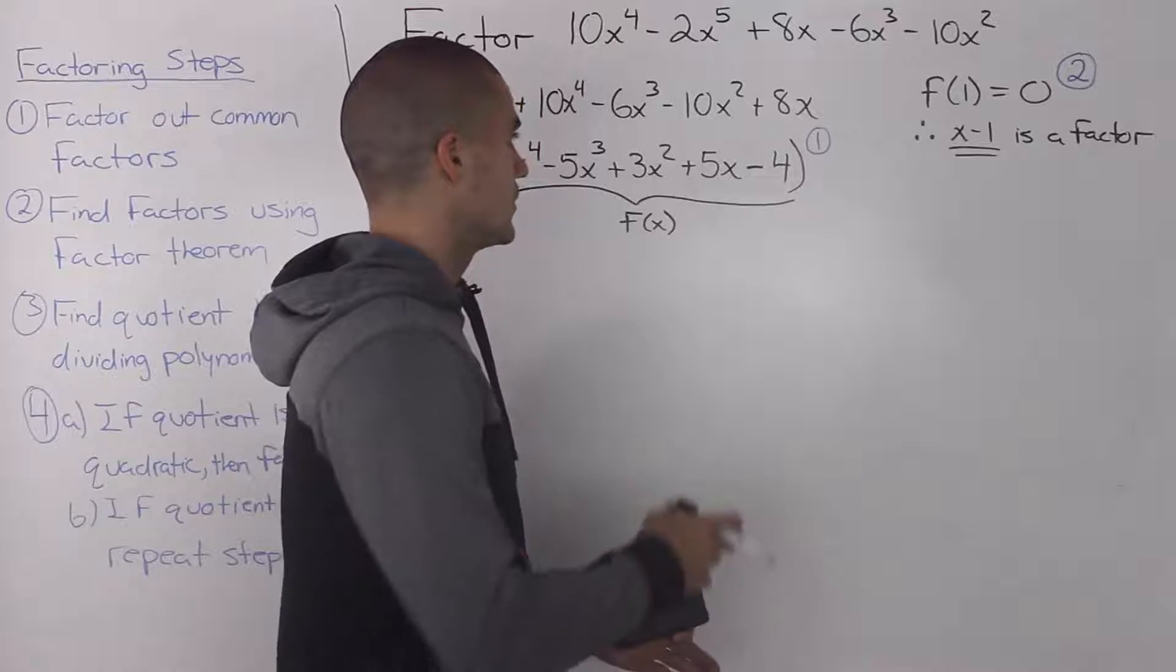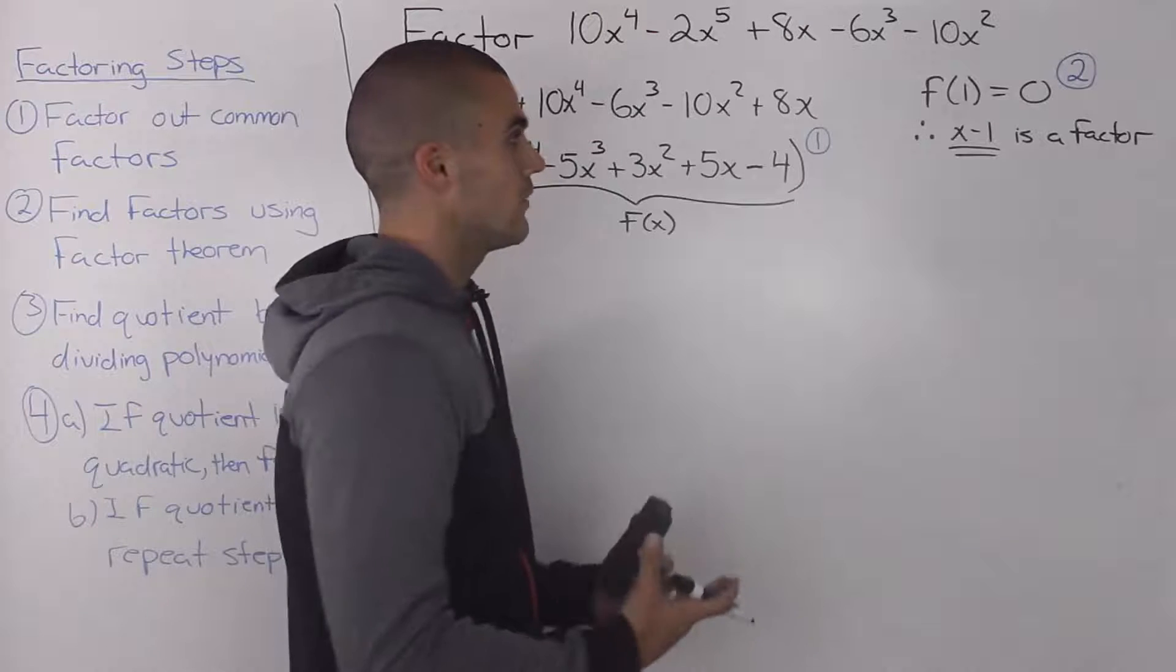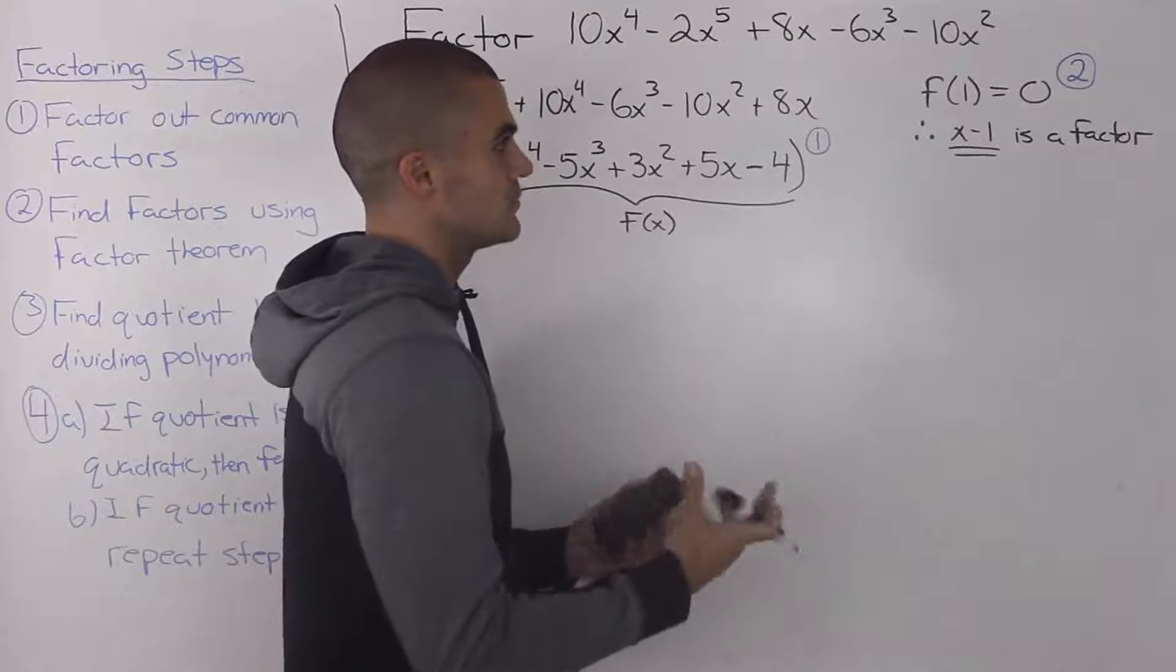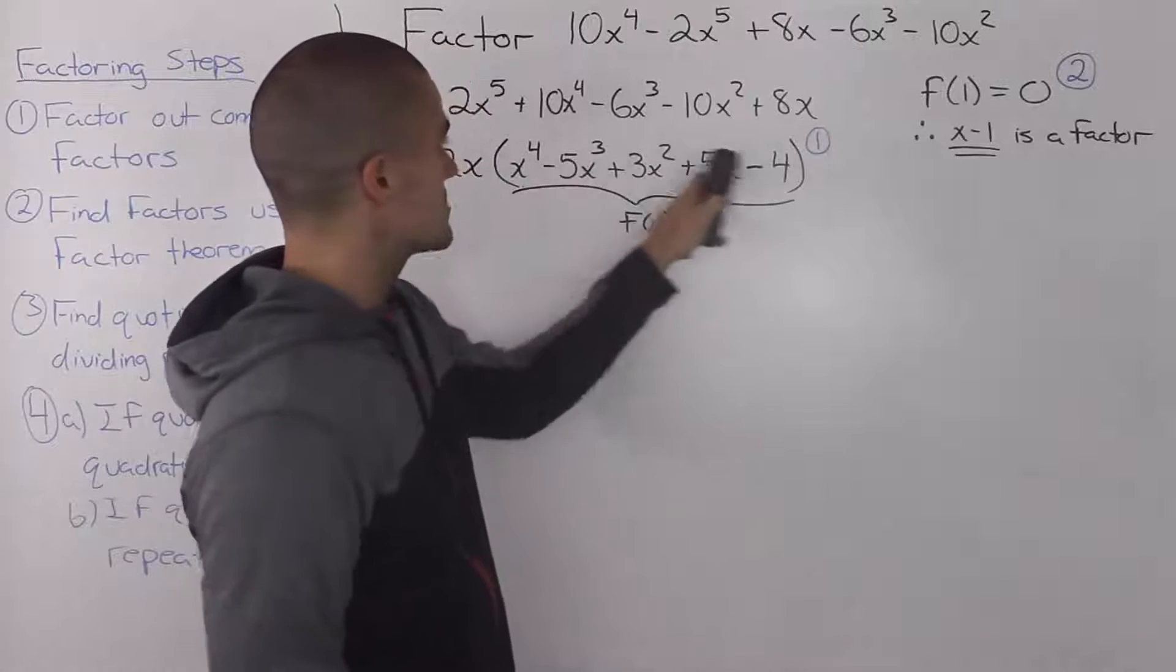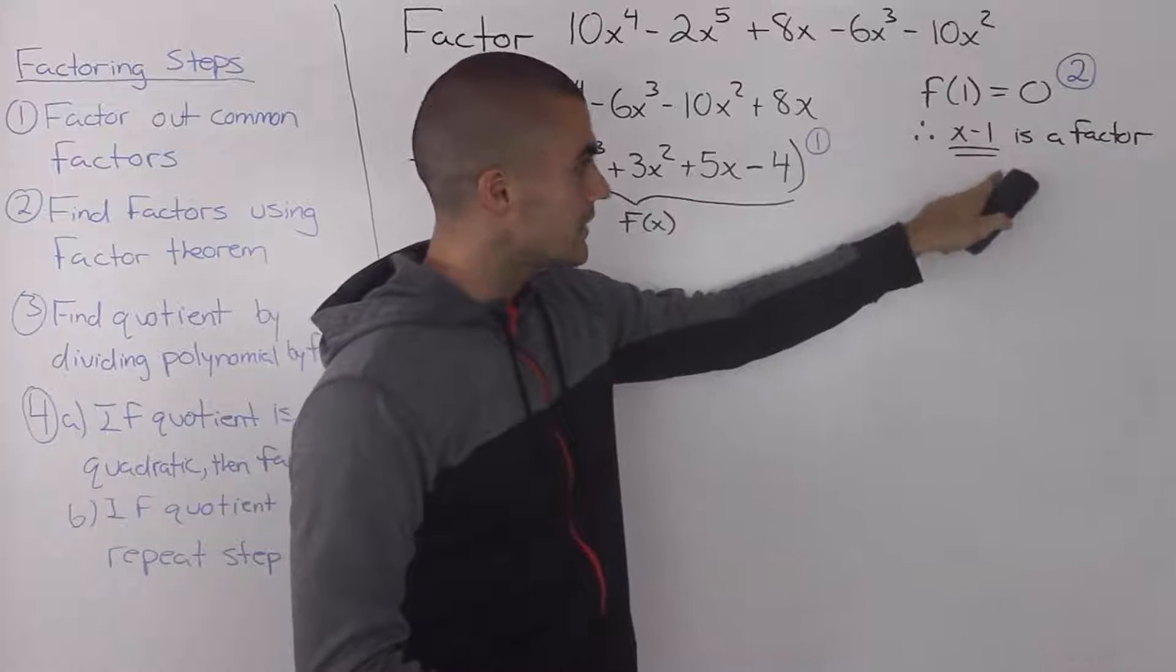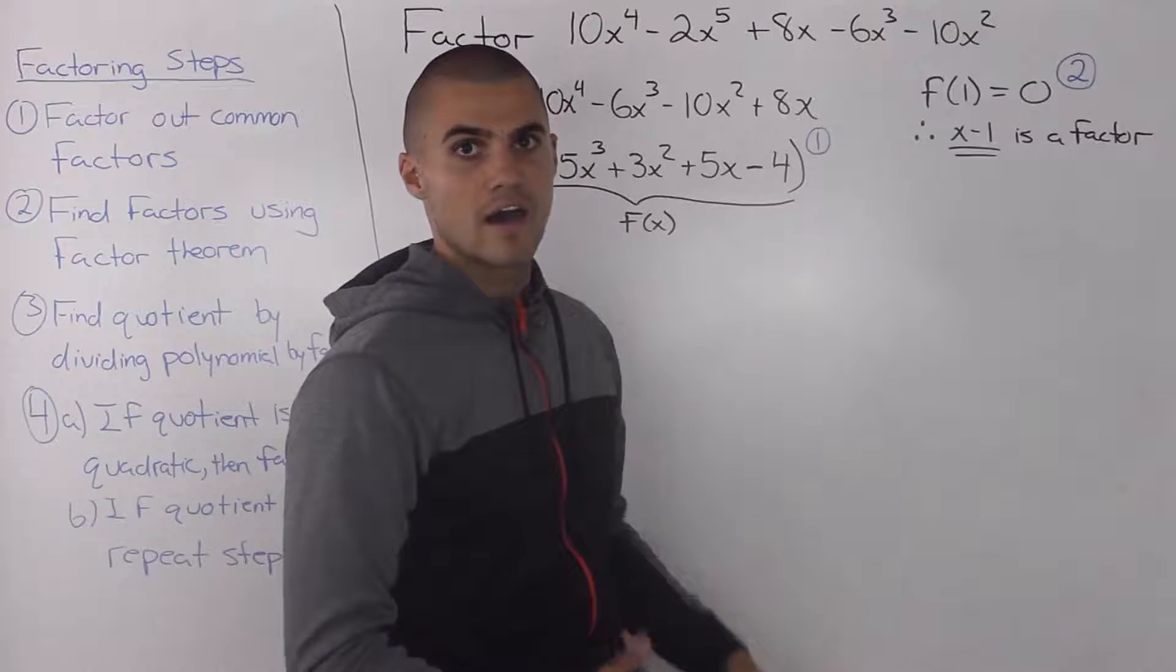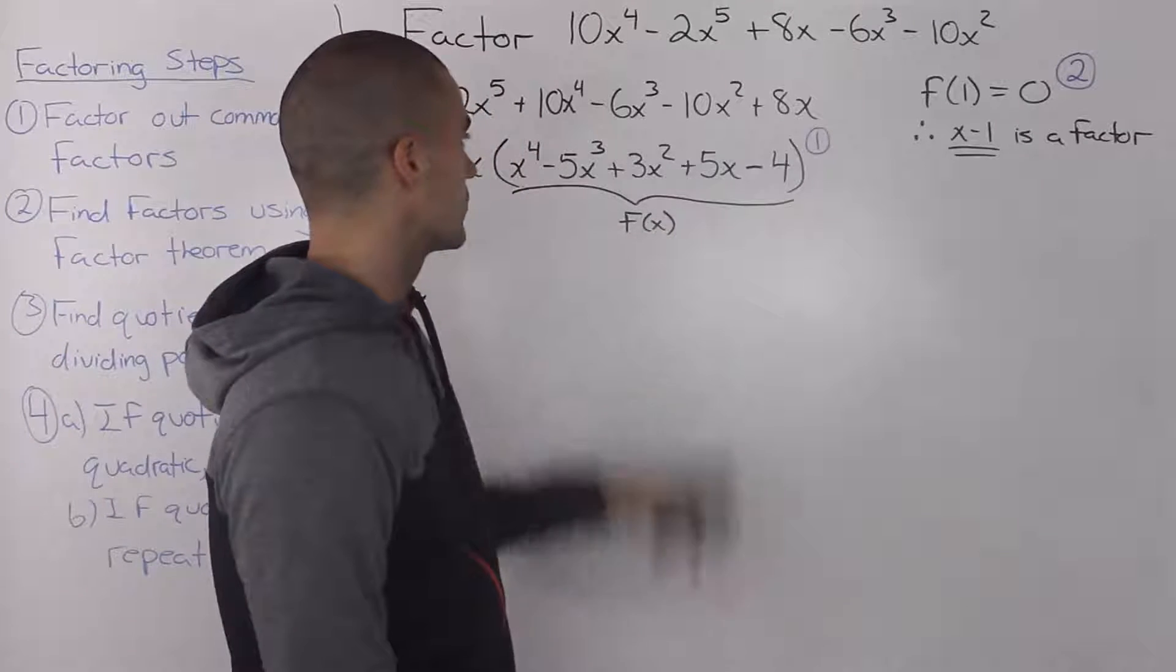And we would keep plugging in values until we get a value of 0. And then we know that x minus that k value would be a factor. So plugging in 1 into this polynomial, we get a value of 0. So we know that x minus 1, or x minus that k value, is a factor of this polynomial here.